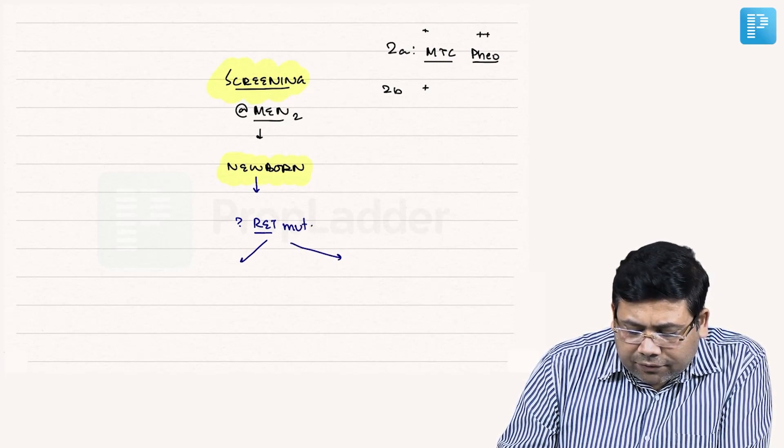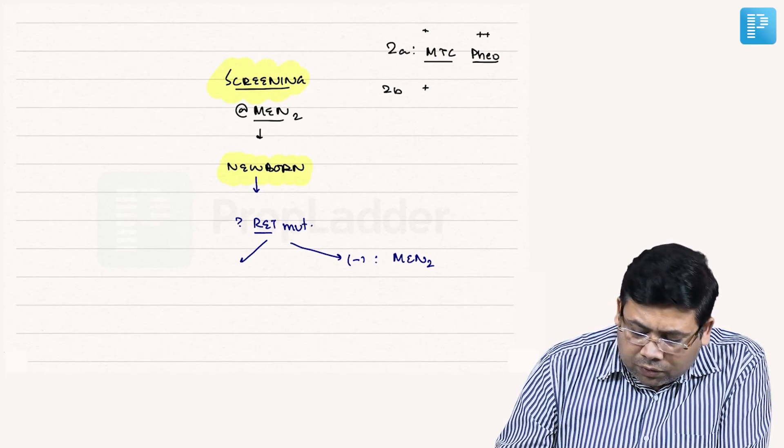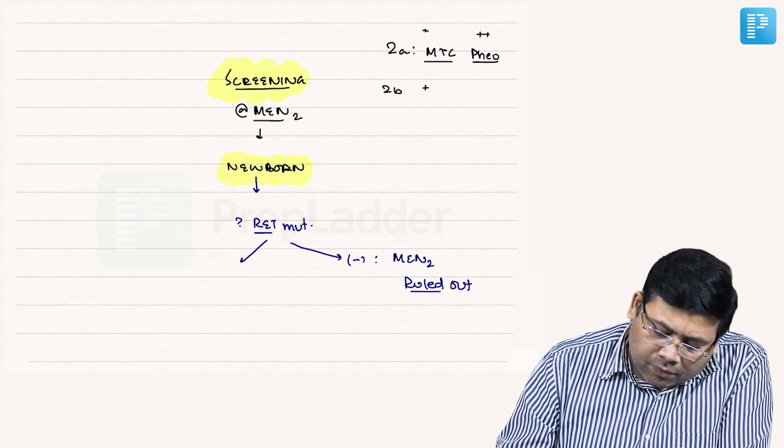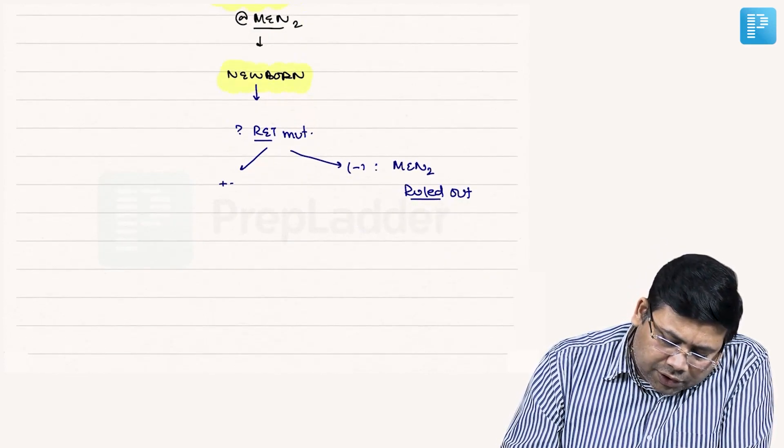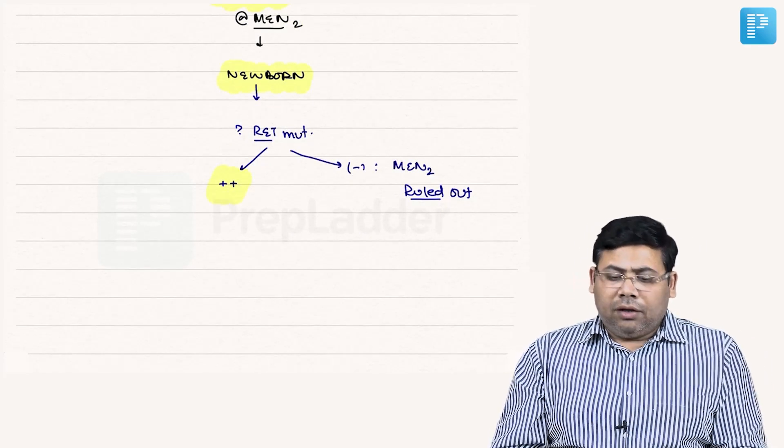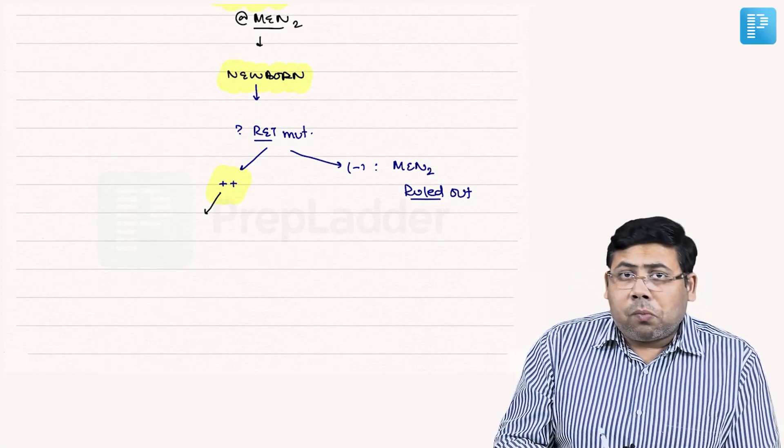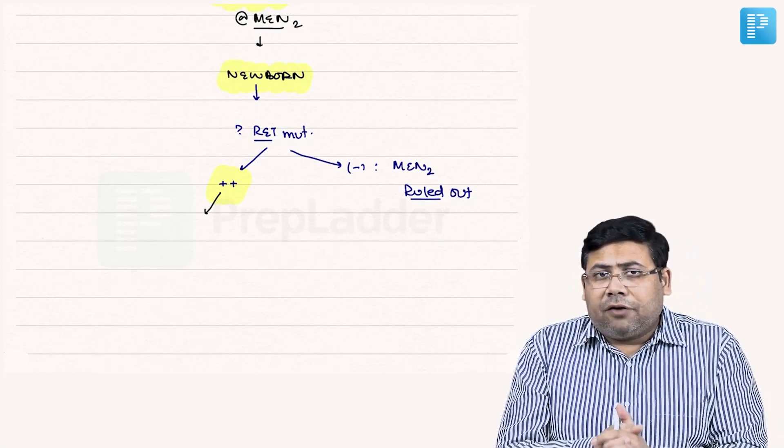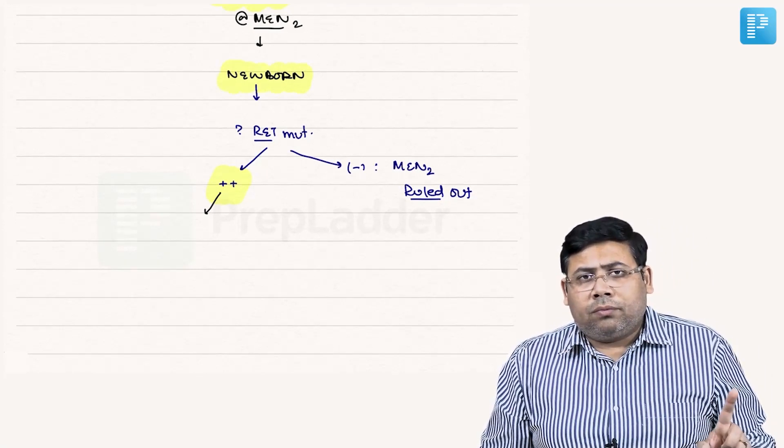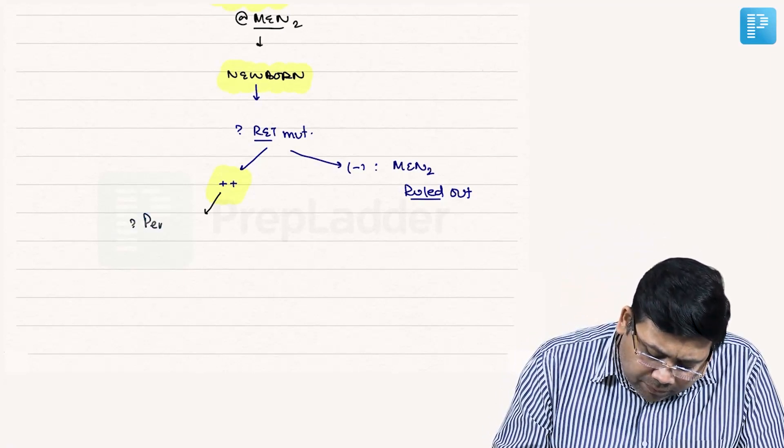If the RET mutation is negative, then MEN2 is ruled out. If the RET mutation is positive, there is increased suspicion. Now the cancer which we screen for is MTC because that is universally presented, so we go for pentagastrin.